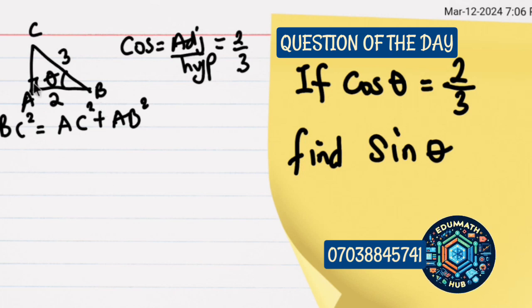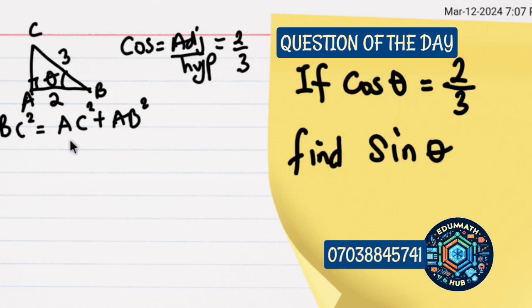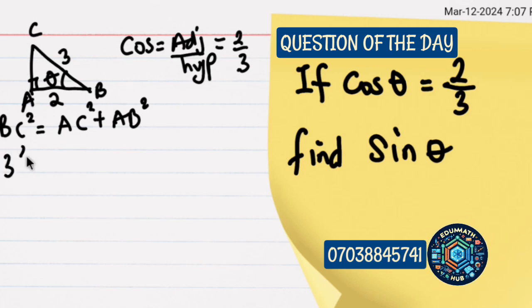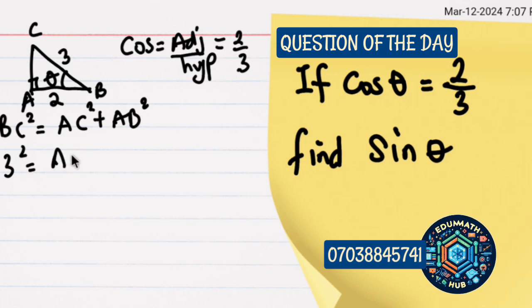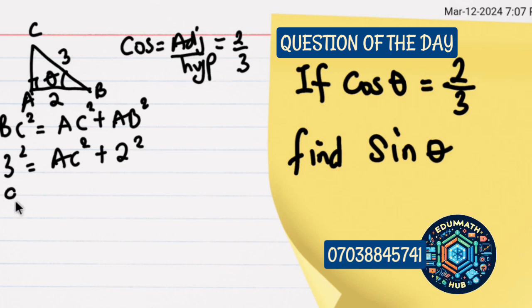Then we substitute the value. We can see that AC is not known, we're looking for AC. AB is known and BC is known. So we have 3 squared equals AC squared plus AB squared which is 2 squared.